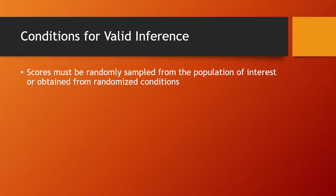First, the scores must be randomly sampled from the population of interest, or if we're looking at scores from conditions in an experiment, they must be from randomized conditions. The key here in both of these situations is randomness, either a random sample or randomization to conditions.